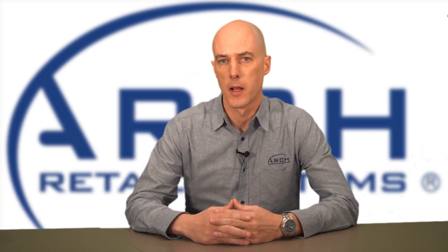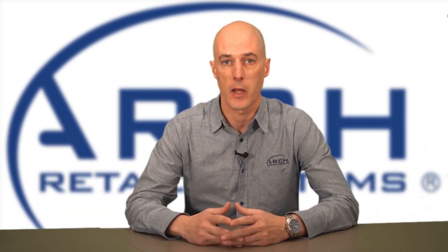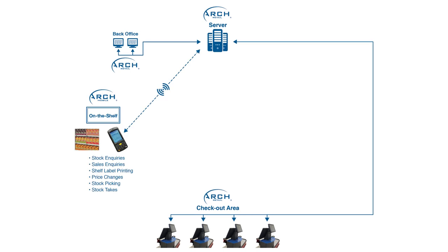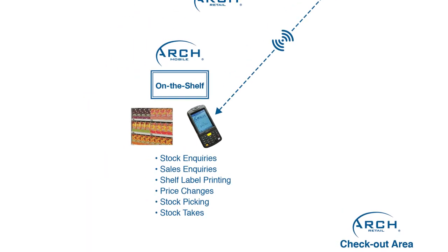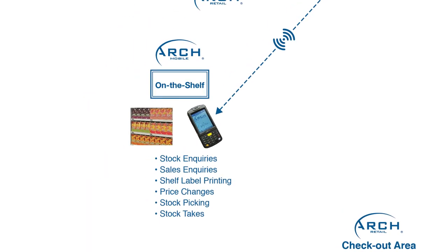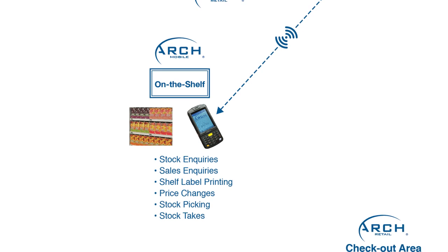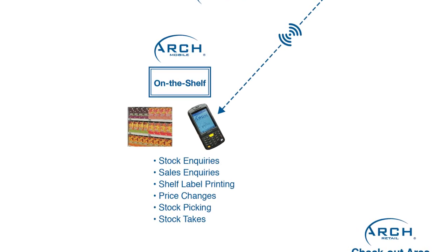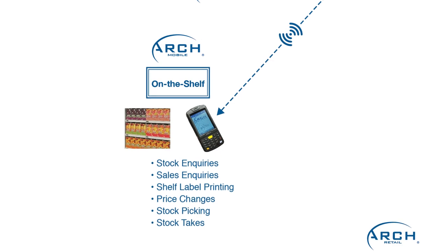ARCH Mobile is applied with great success in the following areas of the business. Firstly, inventory management directly on the sales floor via stock inquiries, sales inquiries, shelf label printing, price changes, stock picking and stock takes.